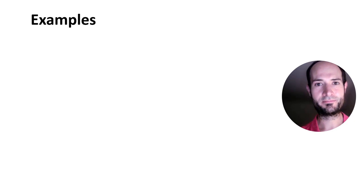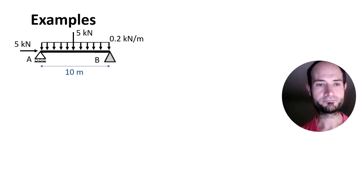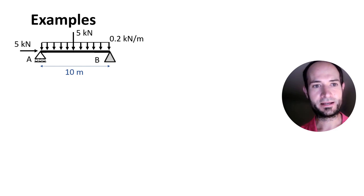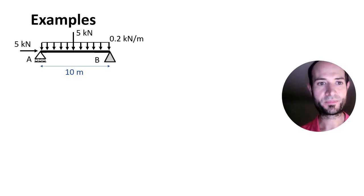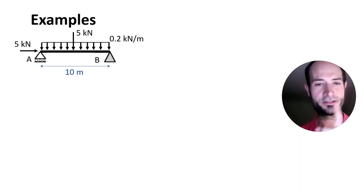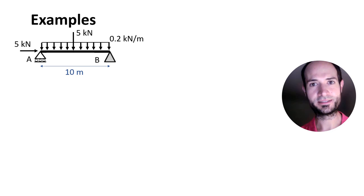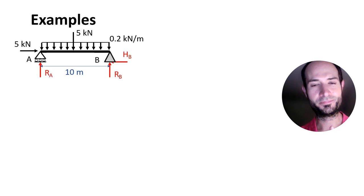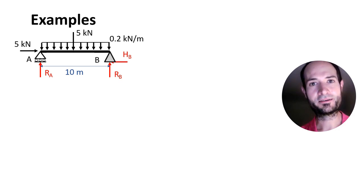Now let me do some examples. We have a bridge with a line load and a point load in vertical and a horizontal point load. On the left we have a roller support, so we know that's going to be one reaction. On the right, a pin support — that's going to be two reactions. So first, put your reactions, name them, and then we are going to use the equations of statics.